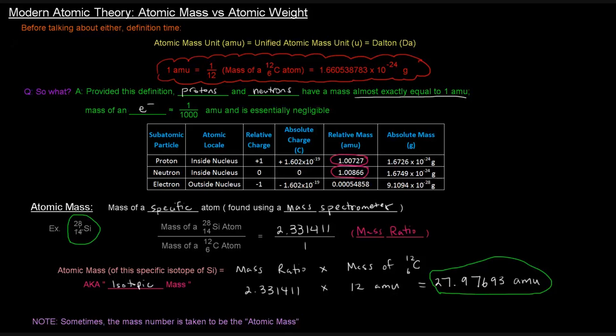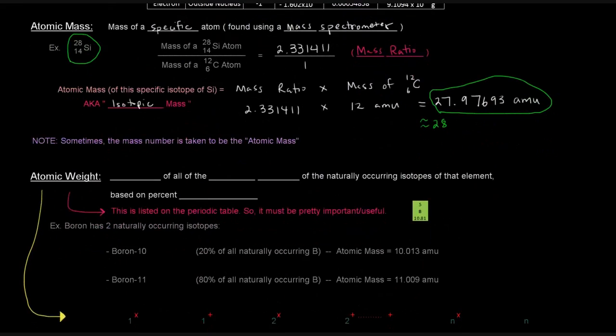And notice that's pretty close to the mass number of 28. Which is why you'll often see the mass number to be taken to mean the same thing as atomic mass. Not quite the same thing, but they tend to go hand in hand depending on who you ask. So if you're having questions about what's going on with atomic mass versus mass number or even about atomic weight, which we'll get to later, definitely be sure to clear that up with your instructor.